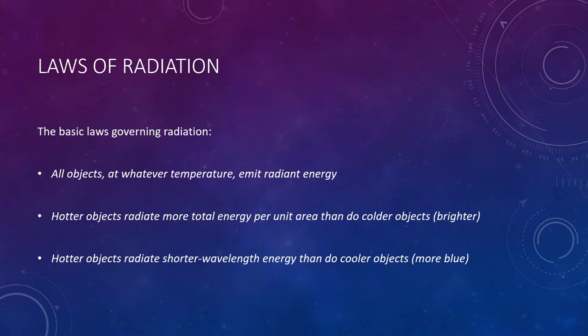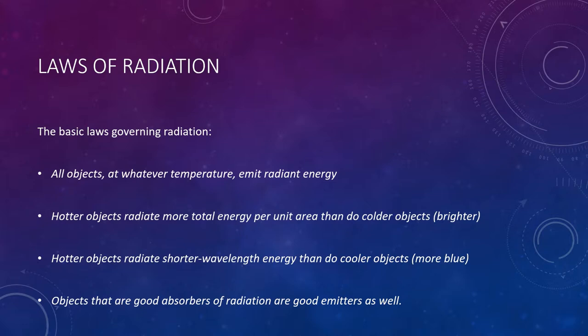Objects that are good absorbers of radiation are good emitters as well. Earth's surface and the Sun approach being perfect radiators, because they absorb and radiate with almost 100% efficiency. Gases, on the other hand, are selective absorbers and radiators. Thus, the atmosphere is nearly transparent to certain wavelengths of radiation but nearly opaque to others — which explains how different layers of the Earth's atmosphere absorb different energies.